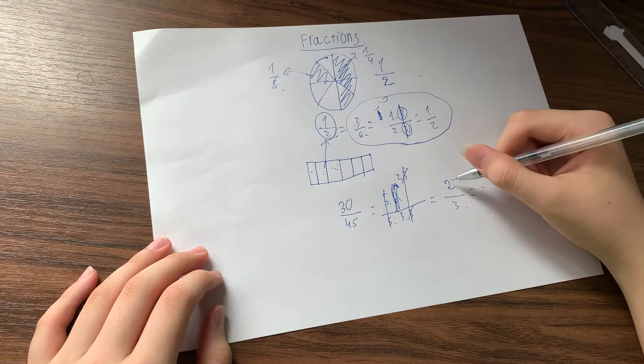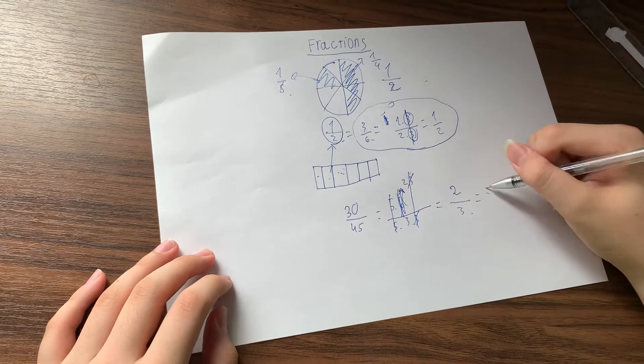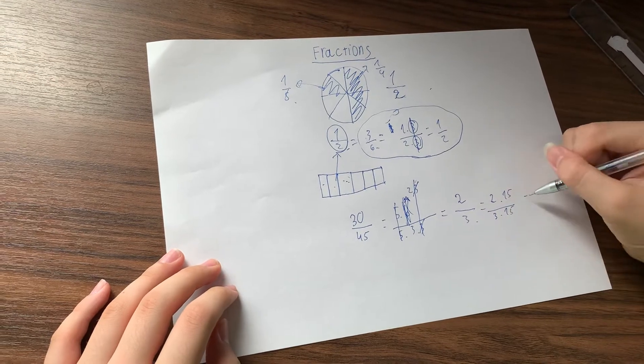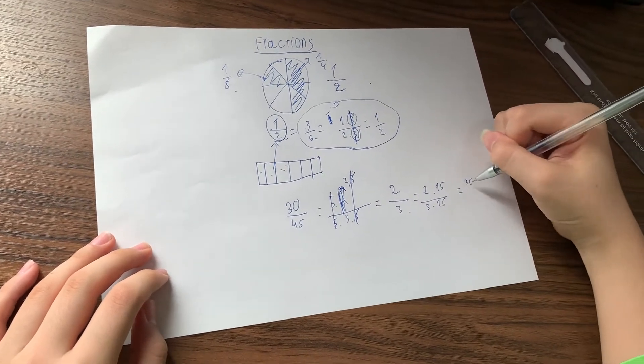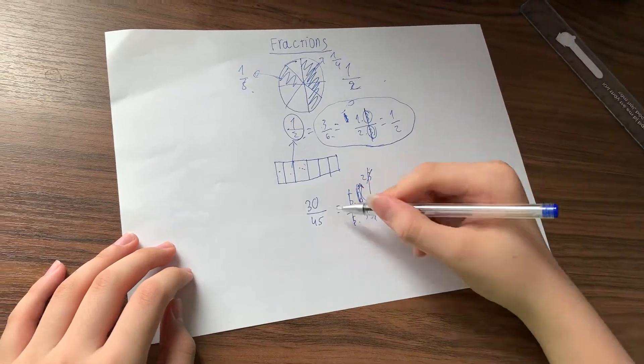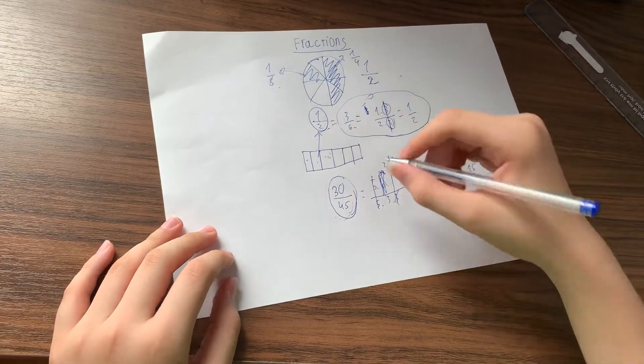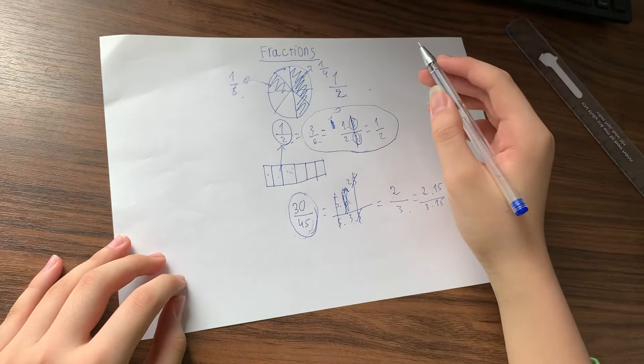So if you try to make it the same as this, you just need to times 15 both of them. And it's equal to 30 over 45. And that's the exact same number. Same fraction as you have before.